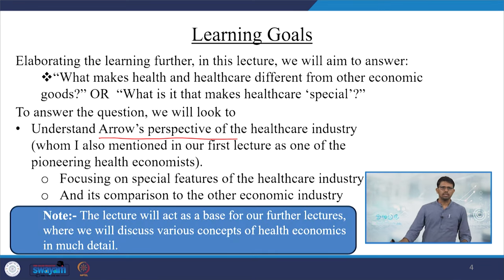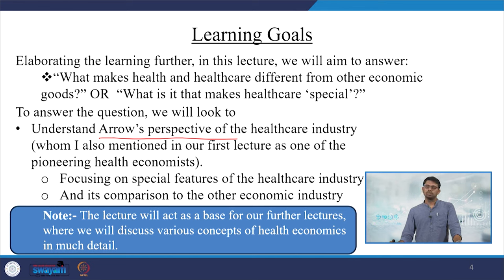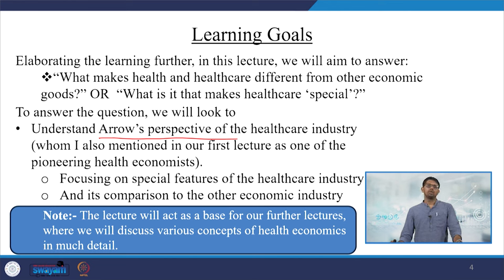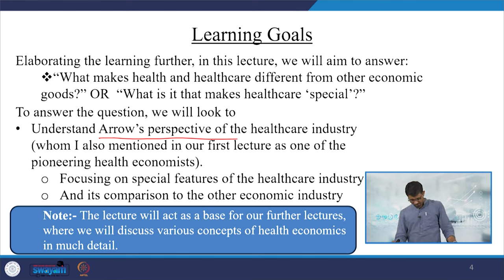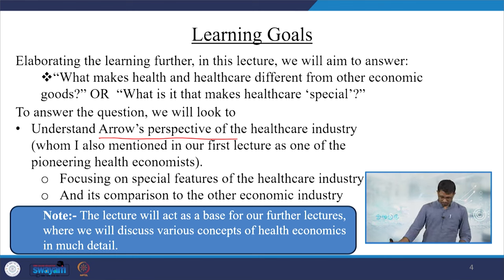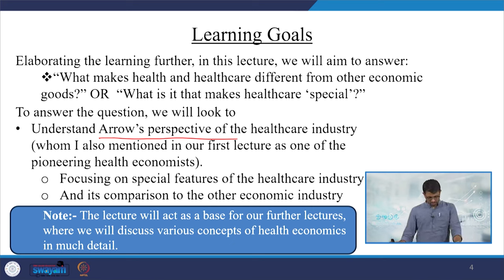This lecture will act as a base for our further lectures, because in other units and weeks of our module we have covered different sections. If you have started exploring some of the concepts of Arrow or Debreu theory, you may not understand everything at this moment — you may have to read specific lectures related to, for instance, insurance. I will also try to relate this to behavioral economics, where things will be clarified in a better way.